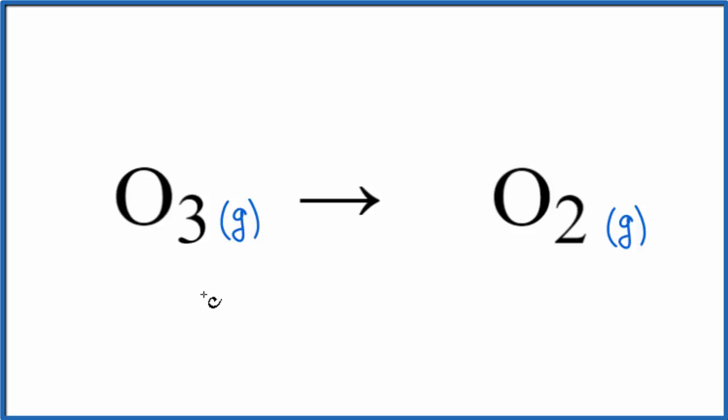Whenever you have an odd number—we have three oxygen atoms here and then over here we have an even number—it's really helpful to get this to be an even number when we're balancing equations. If...